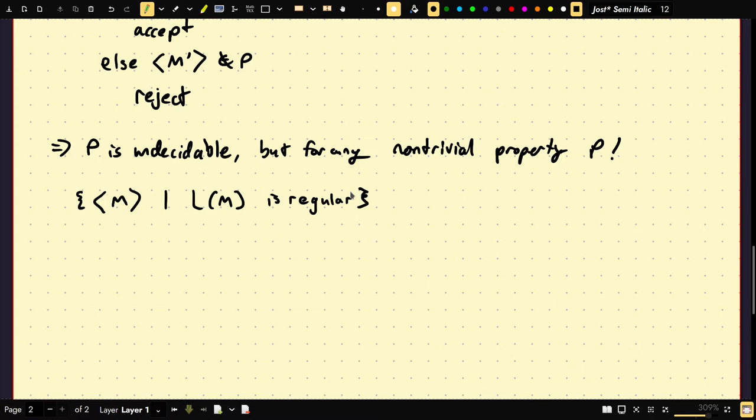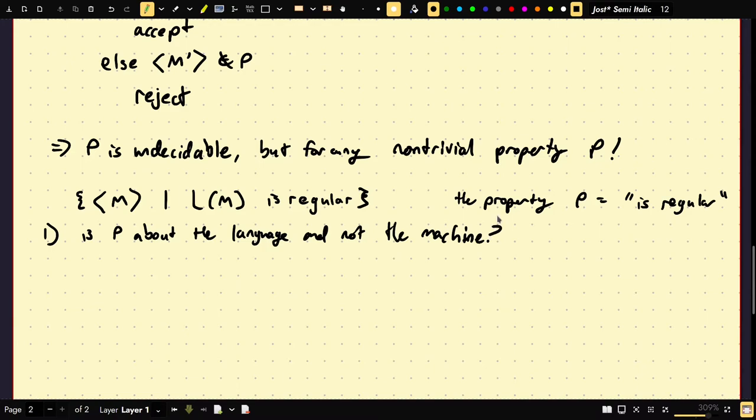Well, first off, we prove this is undecidable through a very complicated reduction. But I can apply it immediately via Rice's theorem. So first, we've got to do two things. The property P is if it's is regular. I could have defined R to be a class of regular languages, and I said if L of M is an R, and then the property then is R. But let's do it this way. So we have to do two things first. One. Is P about the language and not the machine? Yes. Two. Is P non-trivial?